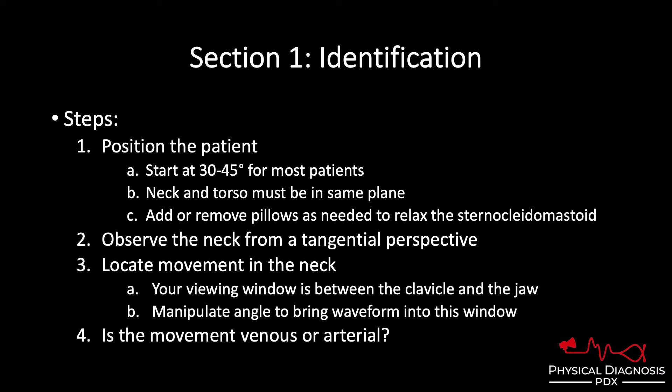Next, you want to locate movement — any movement. The traditional window for viewing movement in the neck is between the patient's clavicle and the angle of their jaw. If the pulse is below the clavicle, you're not going to see it. If it's above the jaw, you may see it but it's not ideal for evaluation. So you want to manipulate the patient's angle to bring the pulse either up from below the clavicle or down from above the jaw and into your viewing window.